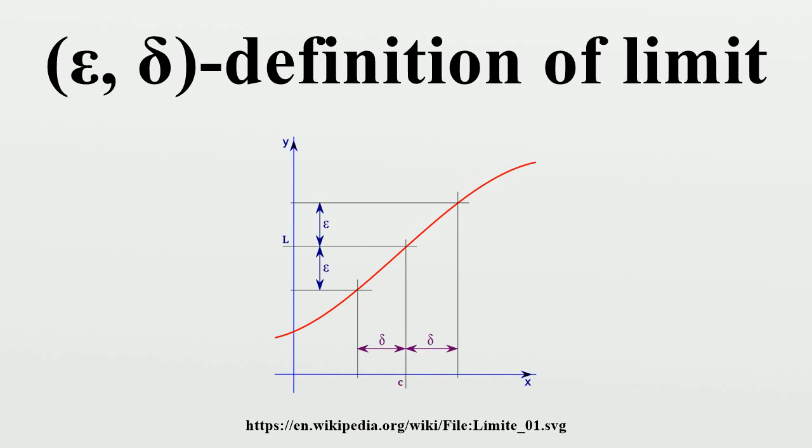Precise statement: The definition of the limit of a function is as follows. Let f be a function defined on a subset, let c be a limit point, and let L be a real number. Then the function has a limit L. It is defined to mean: for all epsilon greater than zero, there exists delta such that for all x in the domain that satisfy zero less than absolute value of x minus c less than delta, the inequality absolute value of f(x) minus L less than epsilon holds.